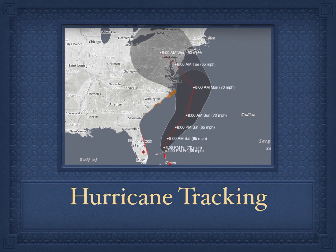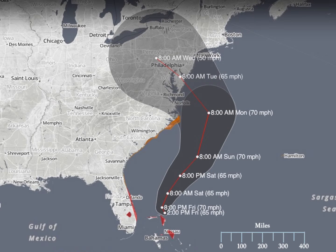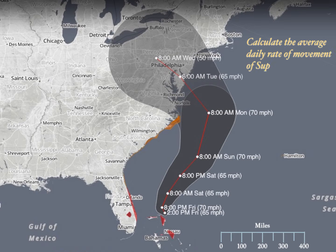Here's another type of rate of change problem where we have to track a hurricane and calculate its rate of speed over a certain time. We have the famous Super Storm Sandy — we can see the path it took in the ocean and then when it hit land, along with the times when that data was taken. The problem asks us to calculate the average daily rate of movement of Super Storm Sandy from Monday through Wednesday.